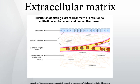Plasmodesmata are pores that traverse the cell walls of adjacent plant cells. These channels are tightly regulated and selectively allow molecules of specific sizes to pass between cells.